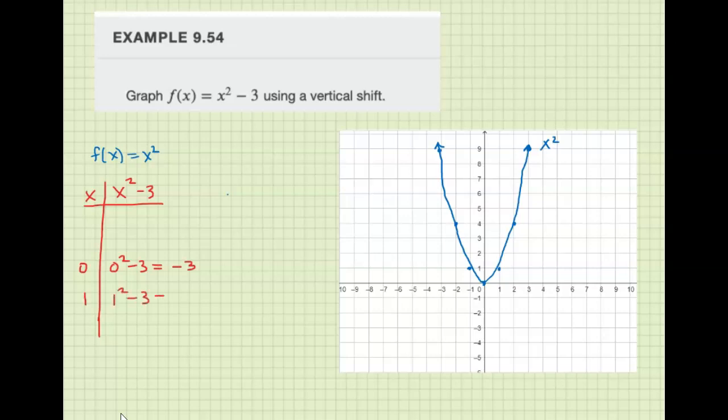1² - 3: 1 - 3 is -2. 2² - 3: 4 - 3 is 1. 3² - 3: 9 - 3 is 6.